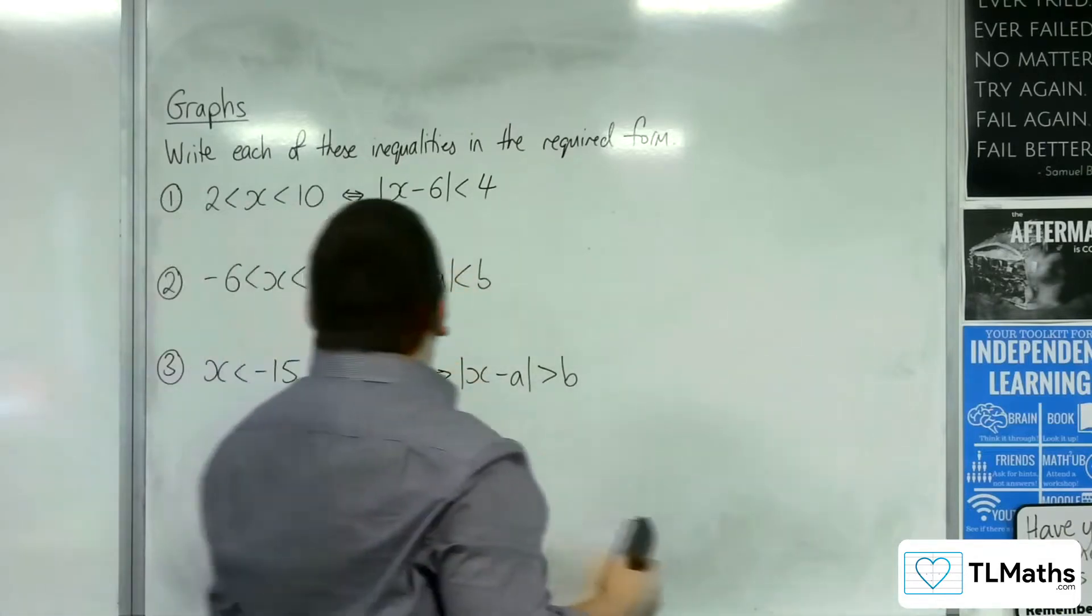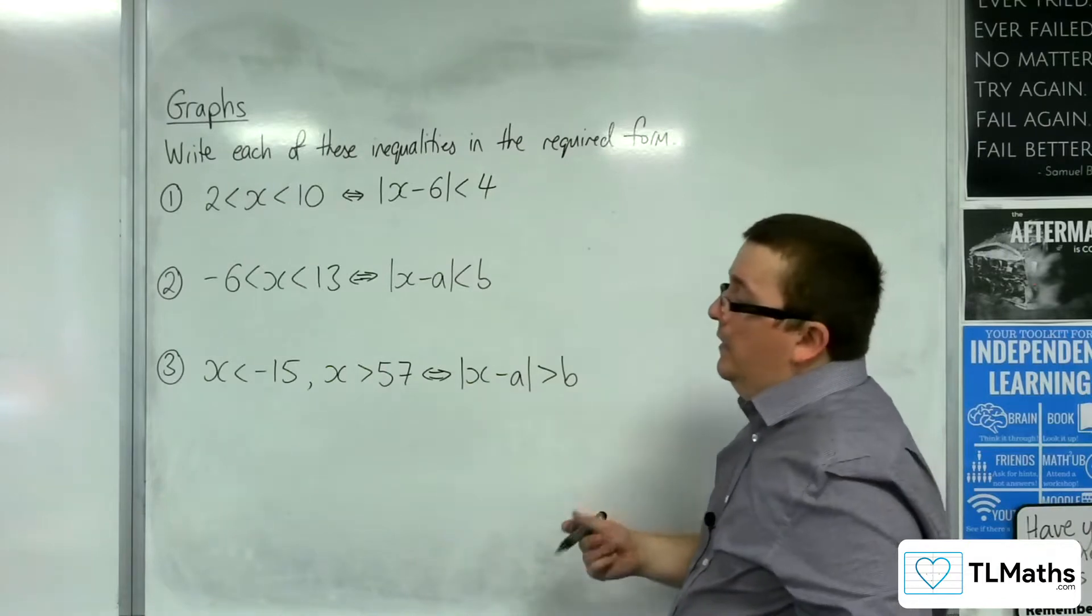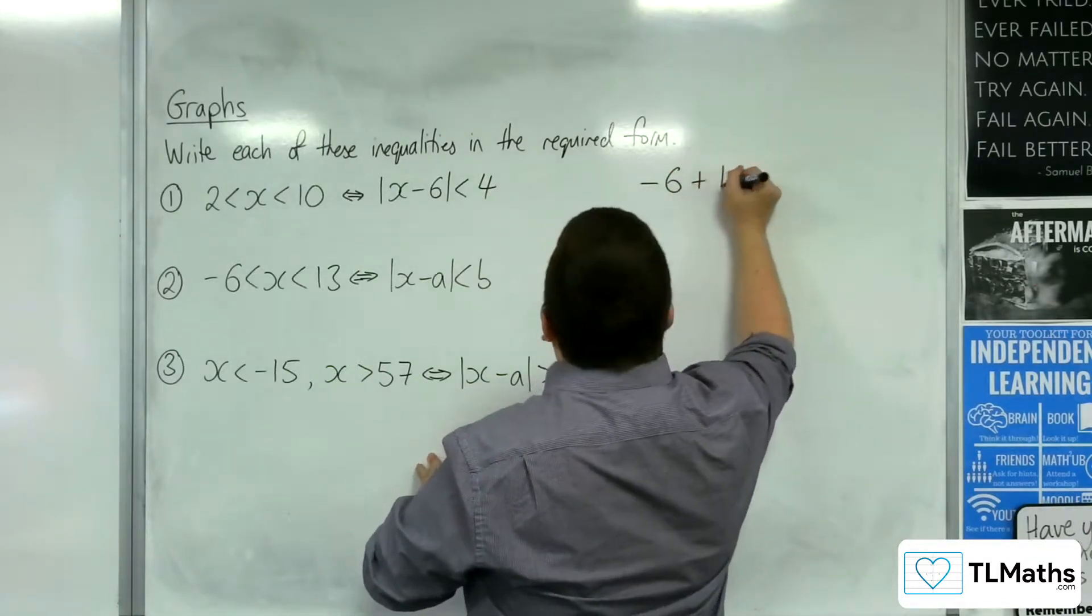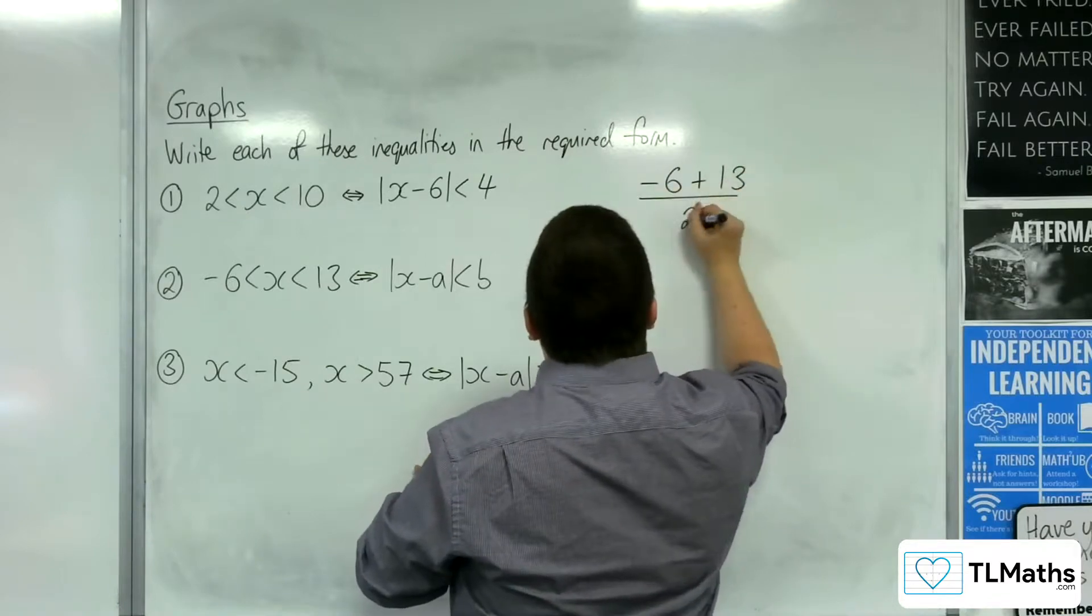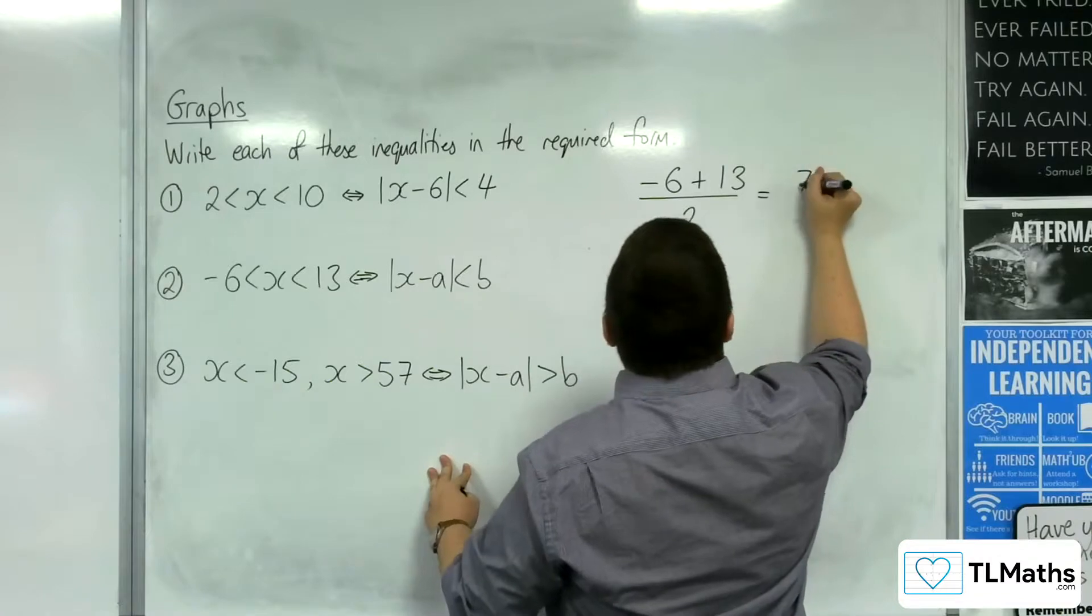Let's have a look at number 2. Minus 6 is less than x is less than 13. Let's do the same thing. Find the average of the minus 6 and the 13. Minus 6 plus 13 is 7, so we have 7 halves.